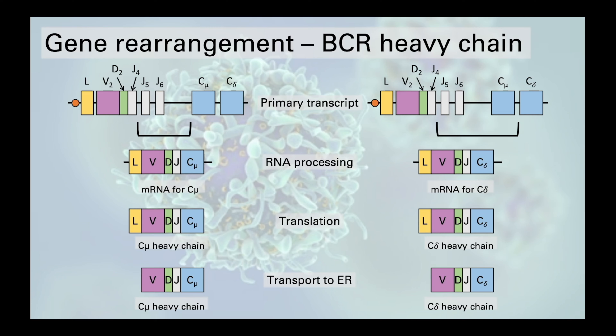Remember that this process is also occurring for the light chain. The only difference is that light chains lack the D segments, so only V and J segments are being joined. This is why you often see VDJ written with the D in brackets — it is VDJ in the heavy chain but just VJ in the light chain.